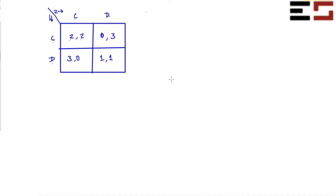Let's find the Nash equilibrium. Instead of writing BR1 and BR2, we are simply going to use this matrix to find it. First we look at the best responses of player one. Given that player two plays C, three is greater than two, so player one would like to play D.